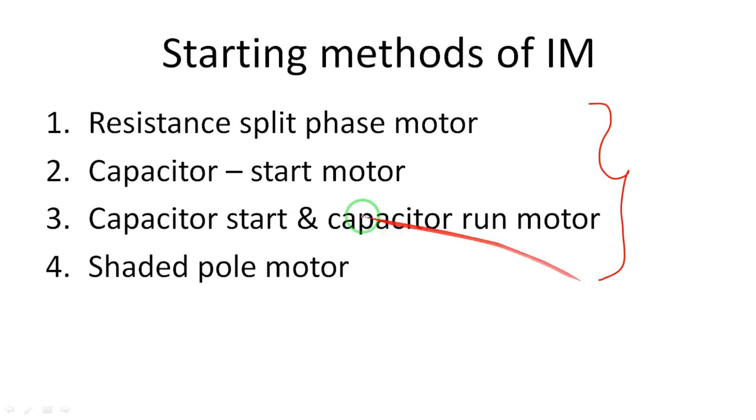There are four types: resistance split phase motor, capacitor start motor, capacitor start and capacitor run motor, and shaded pole motor.